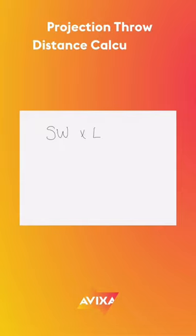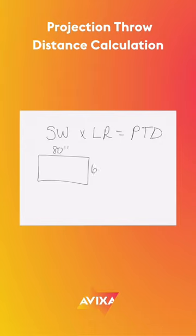The basic equation is to multiply the width by the lens ratio. Here I have an 80 inch wide by 60 inch high screen. I have two different ratios of 2.0 and 2.5.